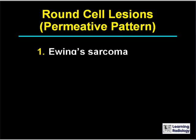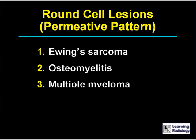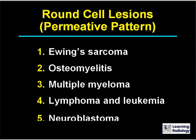The five major causes of a permeative pattern — round cell lesions — are Ewing sarcoma, osteomyelitis, multiple myeloma, lymphoma and leukemia, and neuroblastoma.